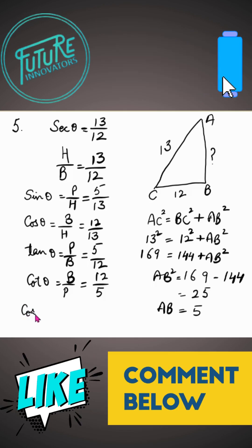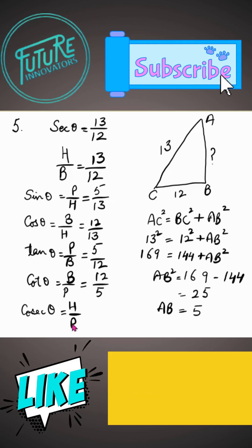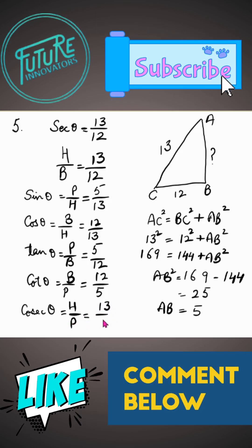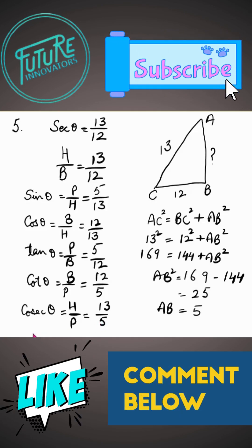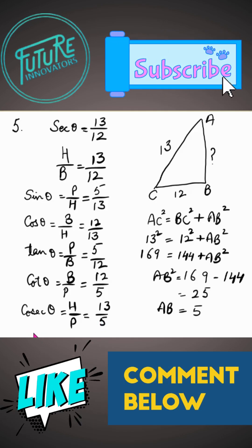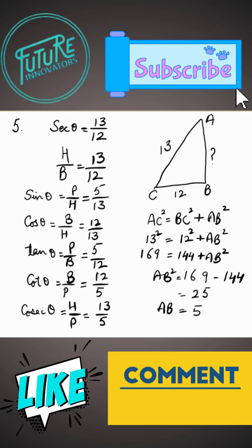Now cosec is the reciprocal of sine, so H upon P. H is 13 and P is 5. Now secant is given, so we have all the ratios. This is the solution of question number 5.